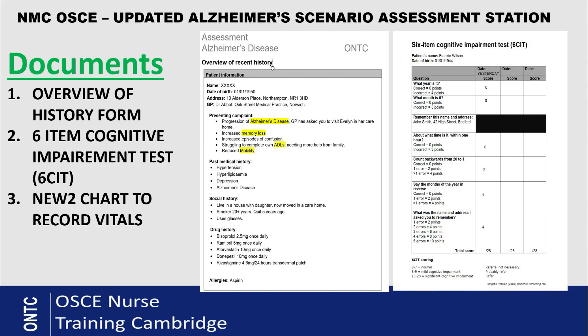Let's look at what documents you're going to get to help you in the assessment station, as there is a lot of confusion about this. You get an overview of history form, which you get in every scenario. It shows patient history, highlighting things like increased memory loss and confusion, inability to do activities of daily living, decreased mobility, and other problems. It also includes past medical history, social history, medication, and allergy status.